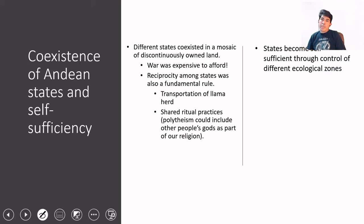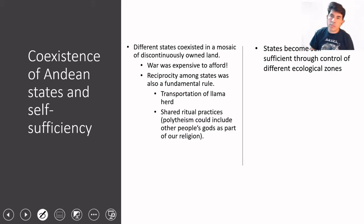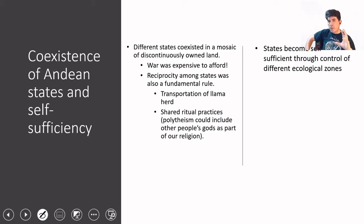Another way in which this reciprocity and connection was enforced was by creating the idea that even though we are different, we still have things in common. Since polytheism was the norm in Andean societies, you had the chance of including the god of your neighbor as part of your own pantheon — part of your collection of gods that you offer rites or pay dues to. In that way you could get some type of connection between people that creates a sense of closeness and preference for those nearer to you.